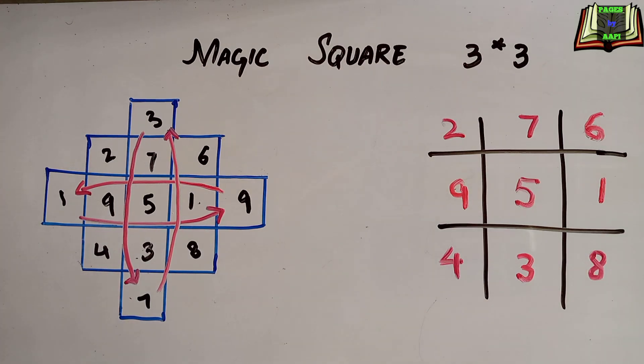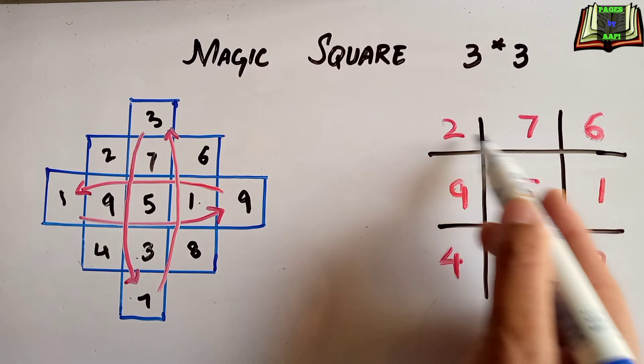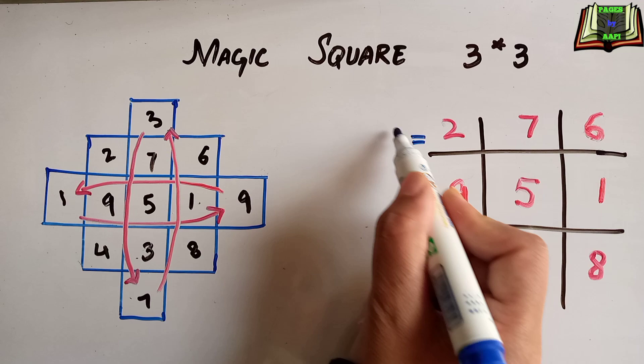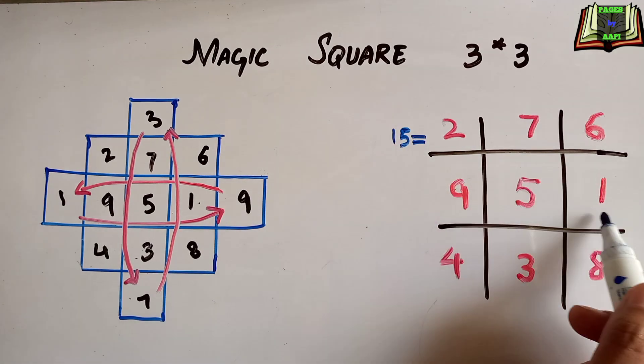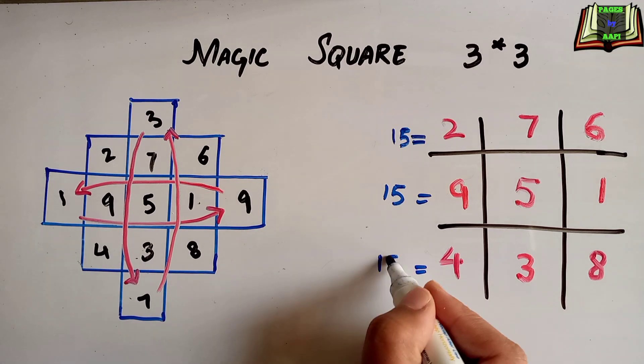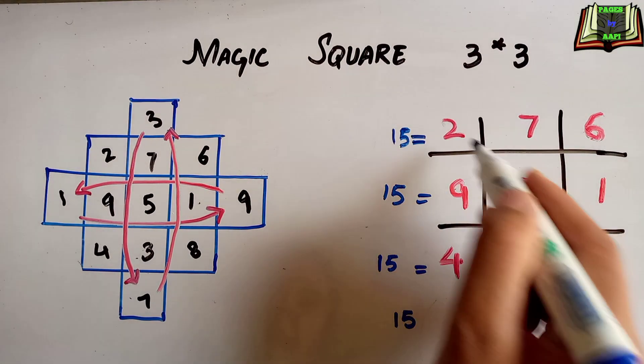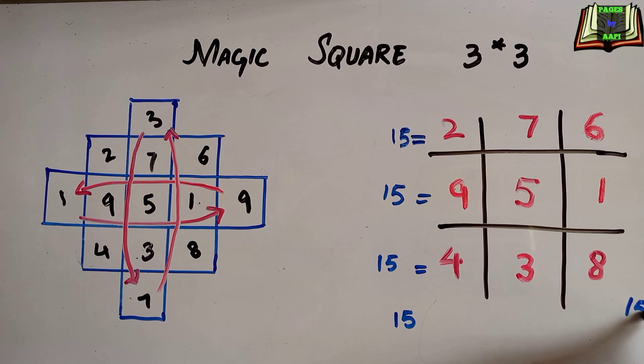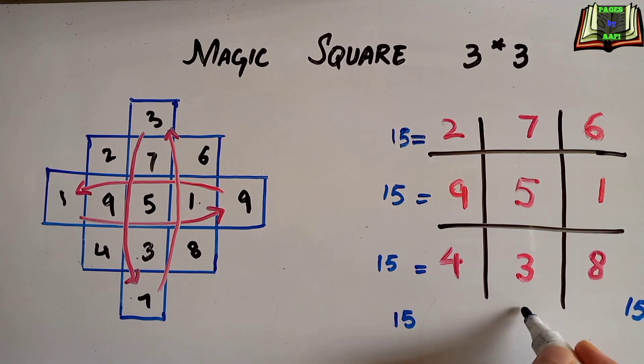But we have to make sure that every row, column, and diagonal sums up with the same number. So for this we can add the rows and columns. 2, 7, 6 is equal to 15. 9, 5, 1 is 15. 4, 3, 8 is 15. 6, 5, 4 is 15. 2, 5, 8 is 15. 7, 5, 3 is 15.